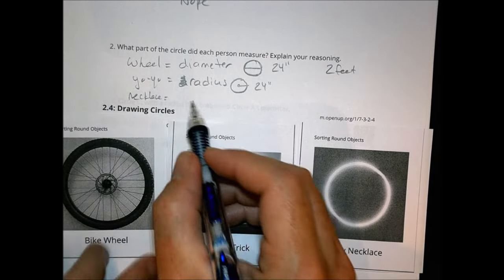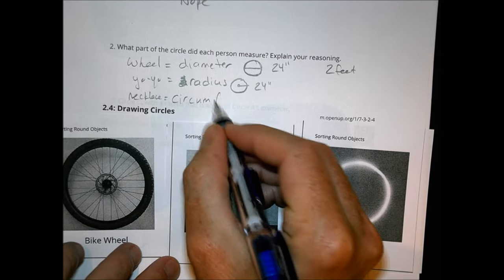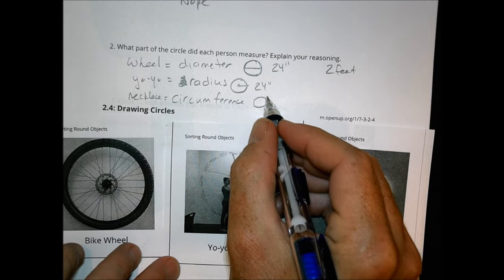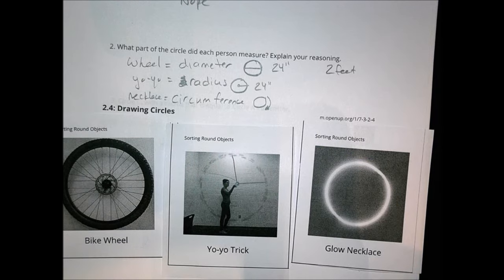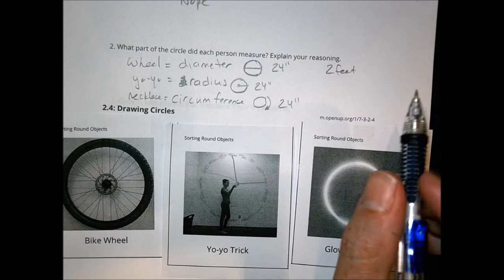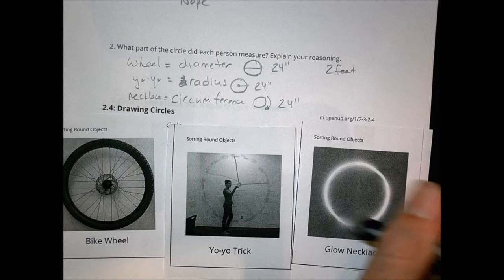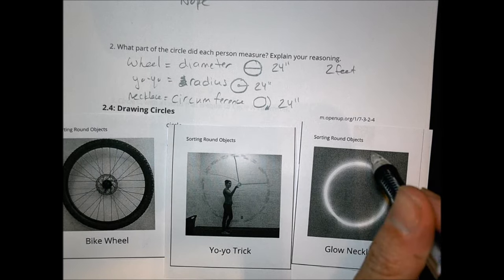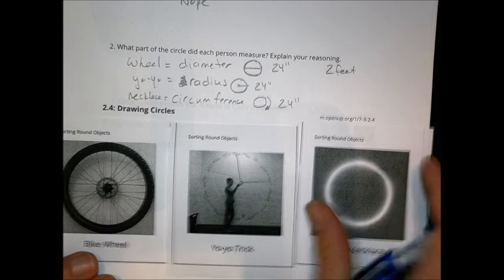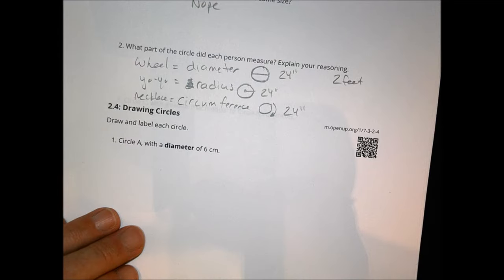For the necklace, 24 inches makes more sense as what we call the circumference — the distance around the object. That's how they got 24 inches there. So the 24 inches all represent different things: whether it be the diameter, the radius, or the circumference — the distance around the object. These are all three different tools we use to describe and measure the sizes of circles.